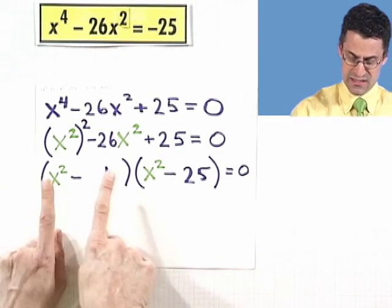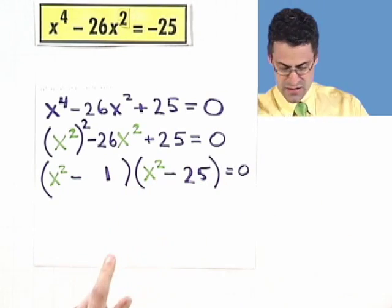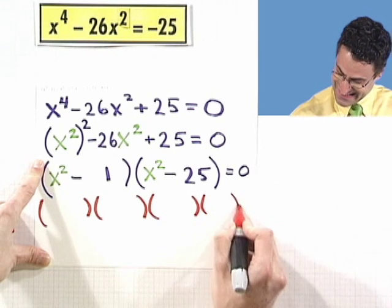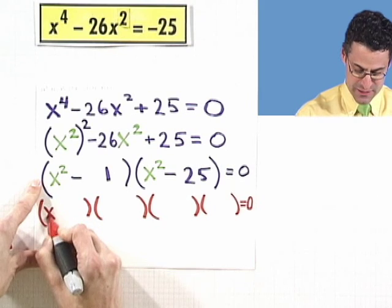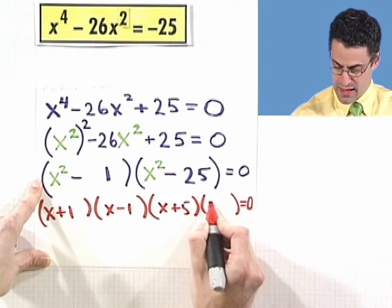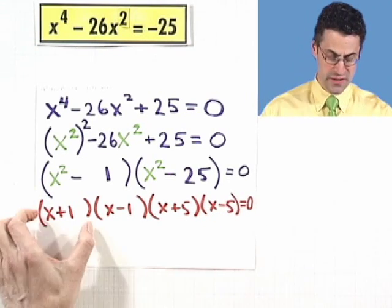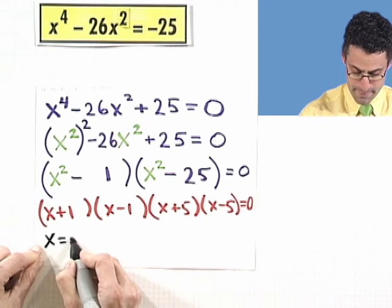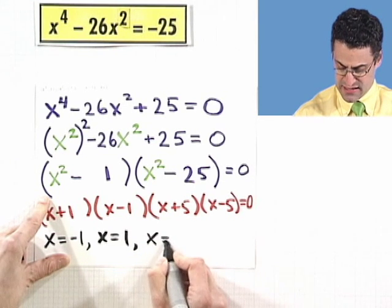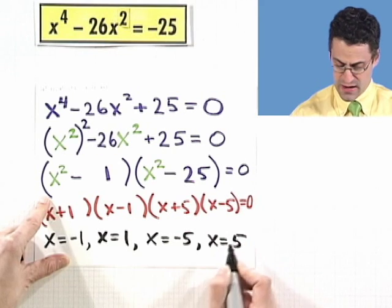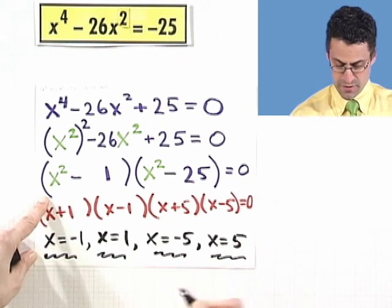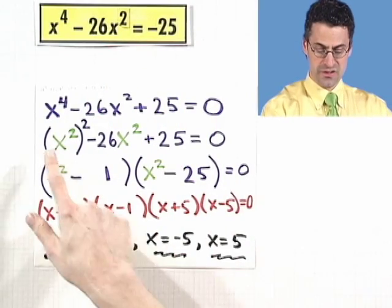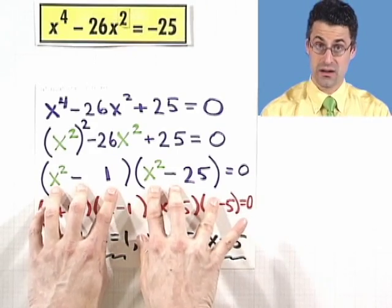I can factor further because x squared minus 25 and x squared minus 1 are each a difference of two perfect squares. So bringing back x, this factors as (x plus 1)(x minus 1)(x plus 5)(x minus 5). Setting each factor equal to zero: x plus 1 equals 0 gives x equals negative 1; x minus 1 equals 0 gives x equals 1; x plus 5 equals 0 gives x equals negative 5; x minus 5 equals 0 gives x equals 5. So there are four solutions: x equals plus or minus 1 and x equals plus or minus 5. The approach was to recognize a hidden quadratic in x squared, factor it, then factor each piece further using difference of squares.